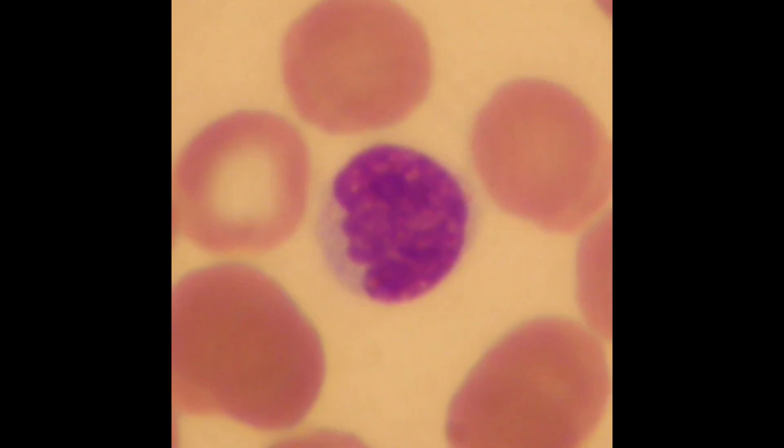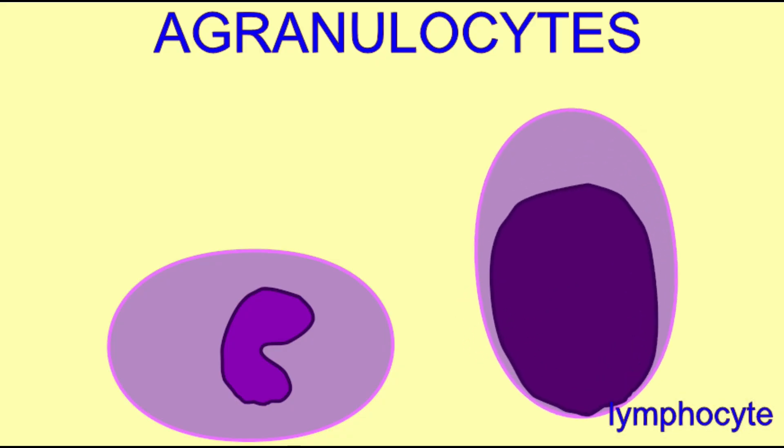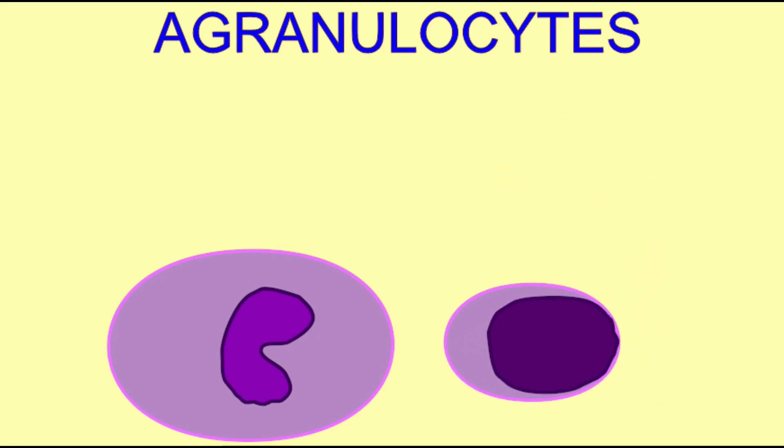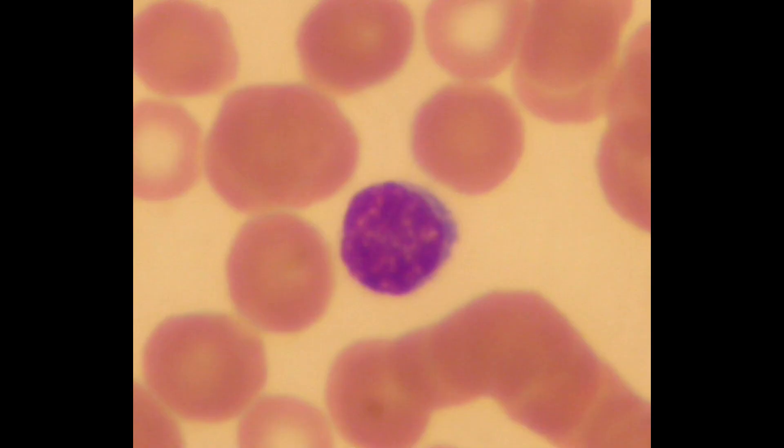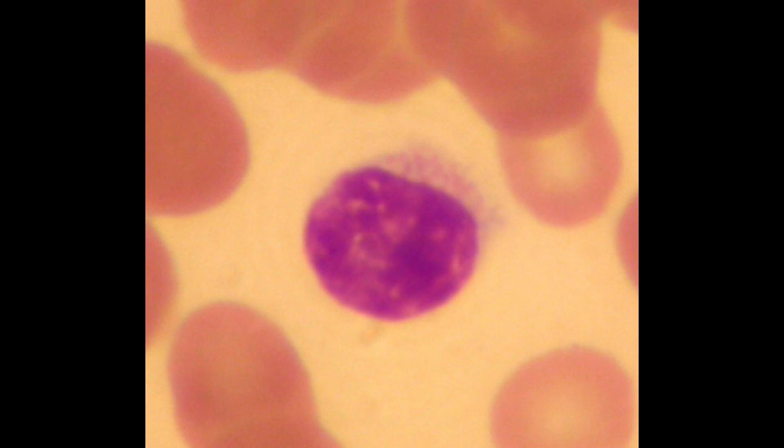They can be recognized by their small size and the small amount of cytoplasm. There are no granules in the cytoplasm, they are agranulocytes, and the nucleus composes the majority of the cell.